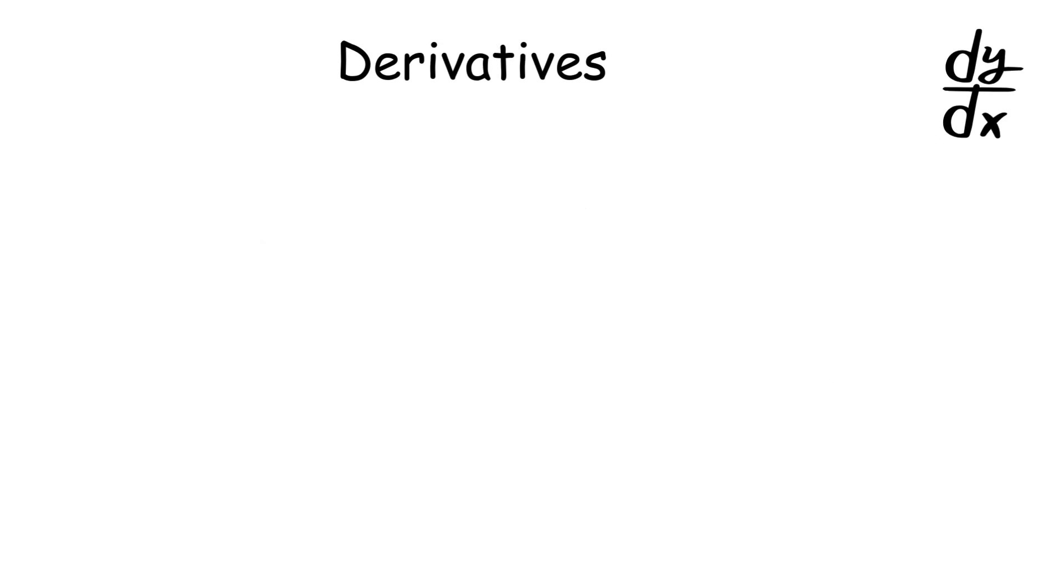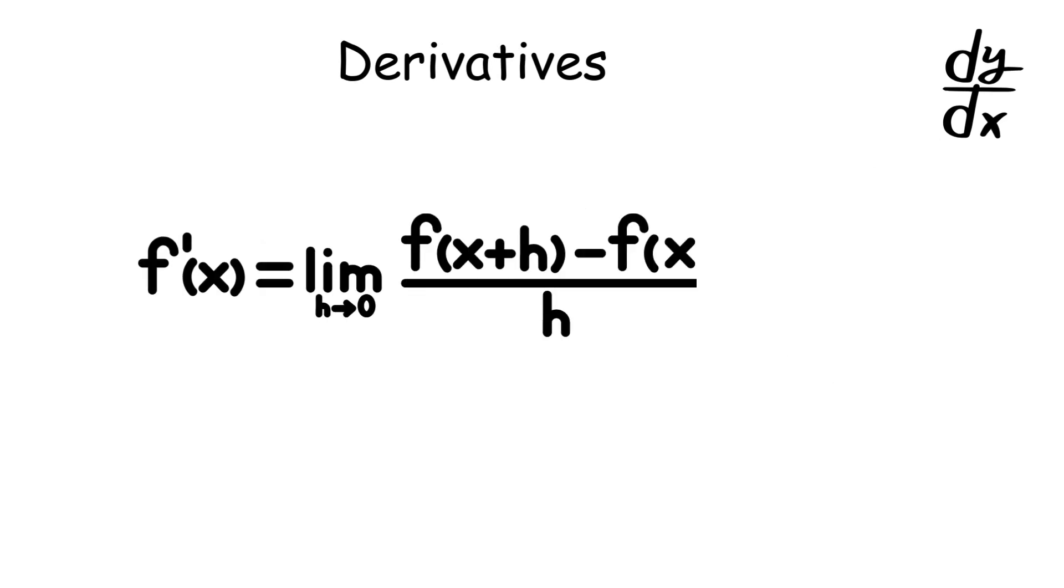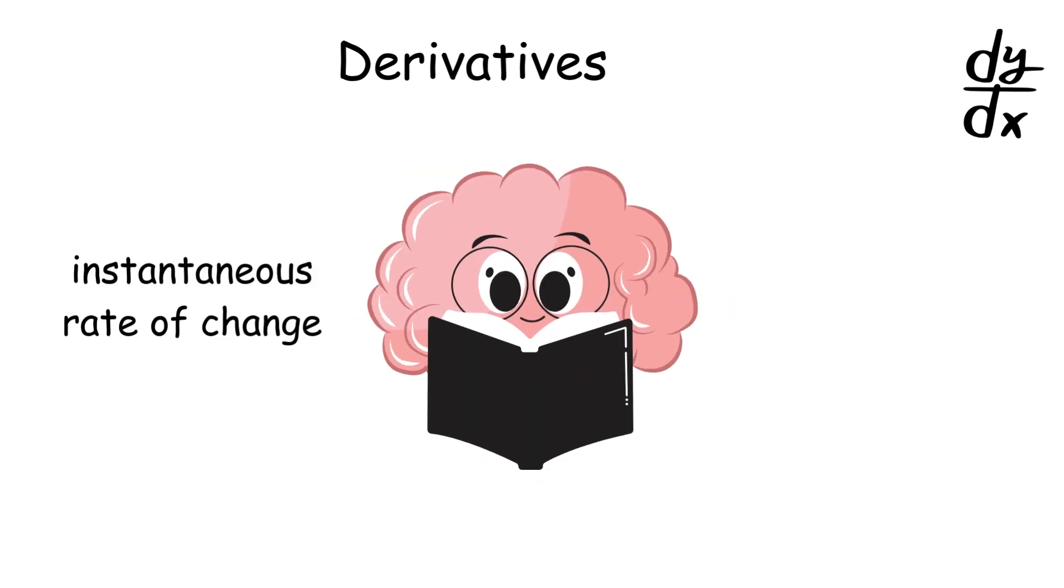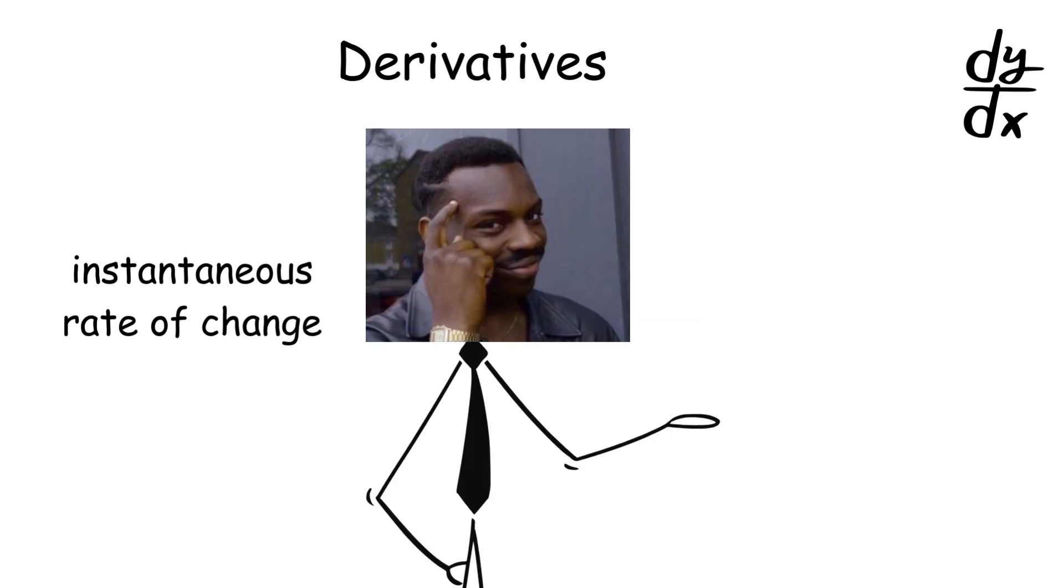Once we understand limits, we get derivatives. A derivative is the limit of the difference quotient as h approaches zero. Big brains call this instantaneous rate of change, but for square brains like me, it's just the slope of the tangent line at any point on a curve.